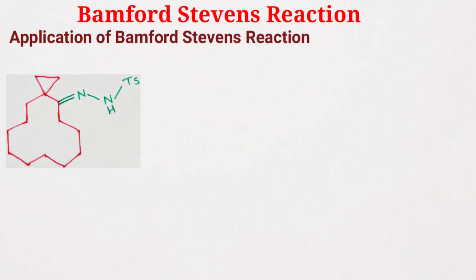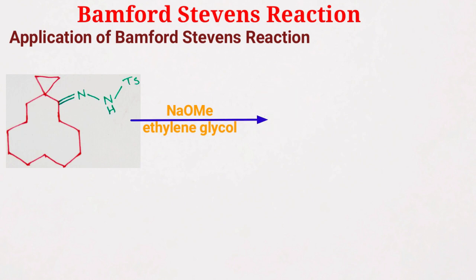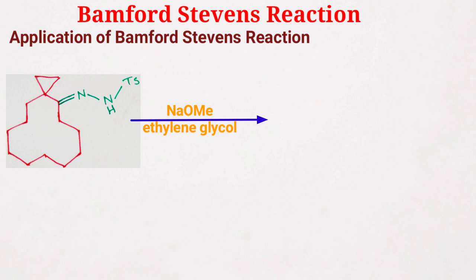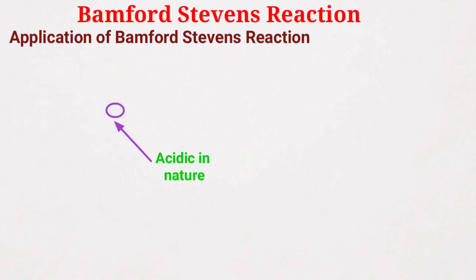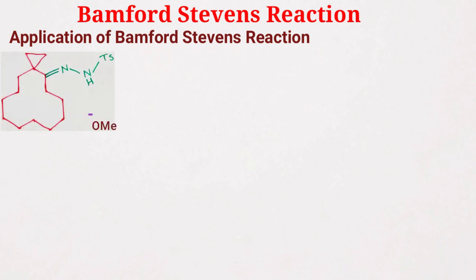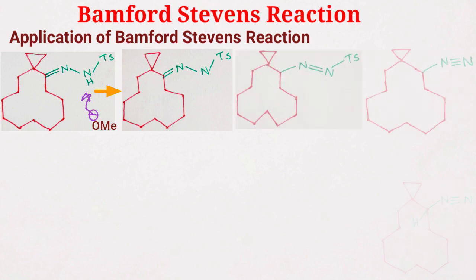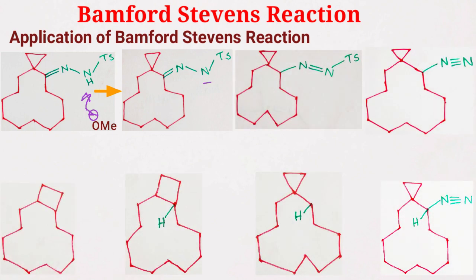Now we will solve a very interesting problem. When this tosylhydrazone is treated with sodium methoxide followed by ethylene glycol, what will be the product? This is an application of the Bamford-Stevens reaction. This hydrogen is acidic in nature due to the presence of a heteroatom, so the base takes this proton to give this intermediate. The mechanism is like this.